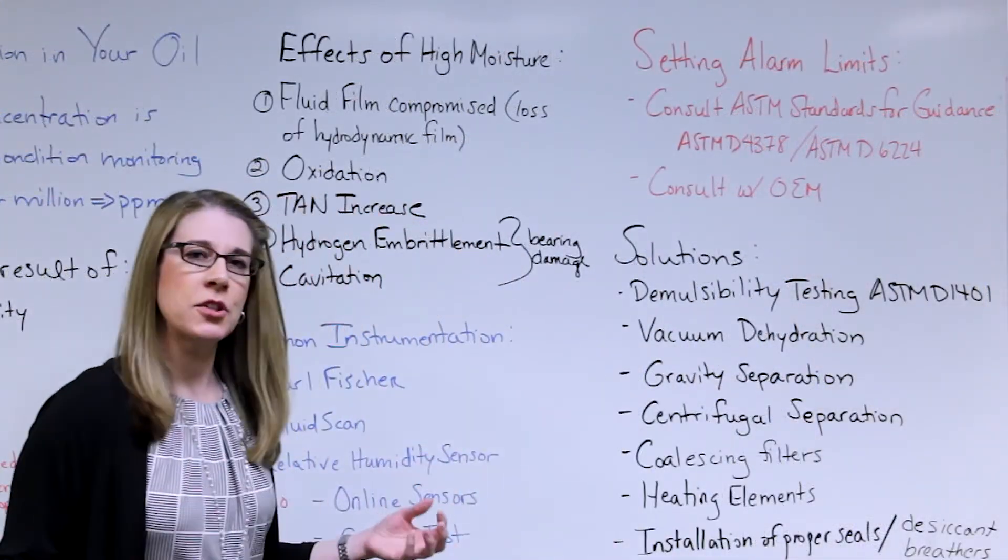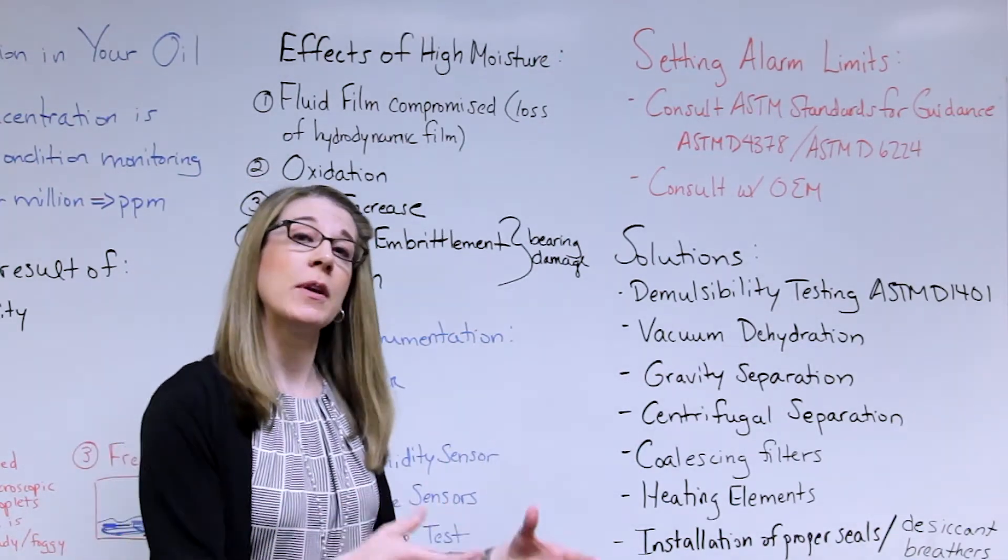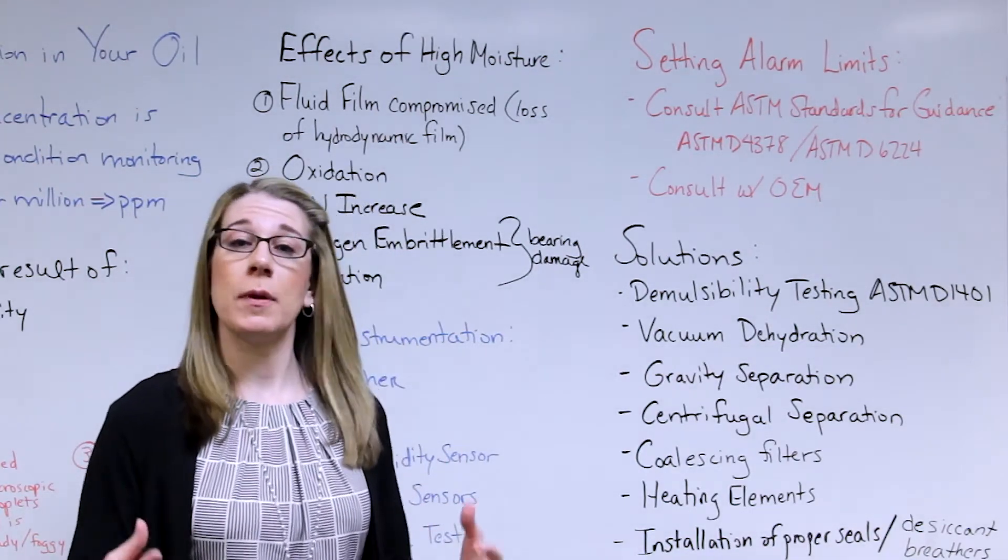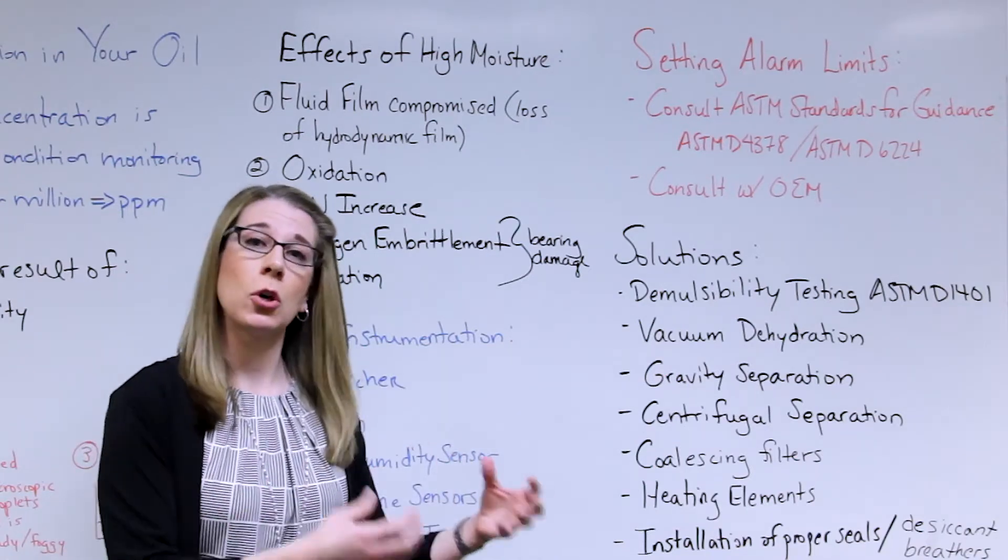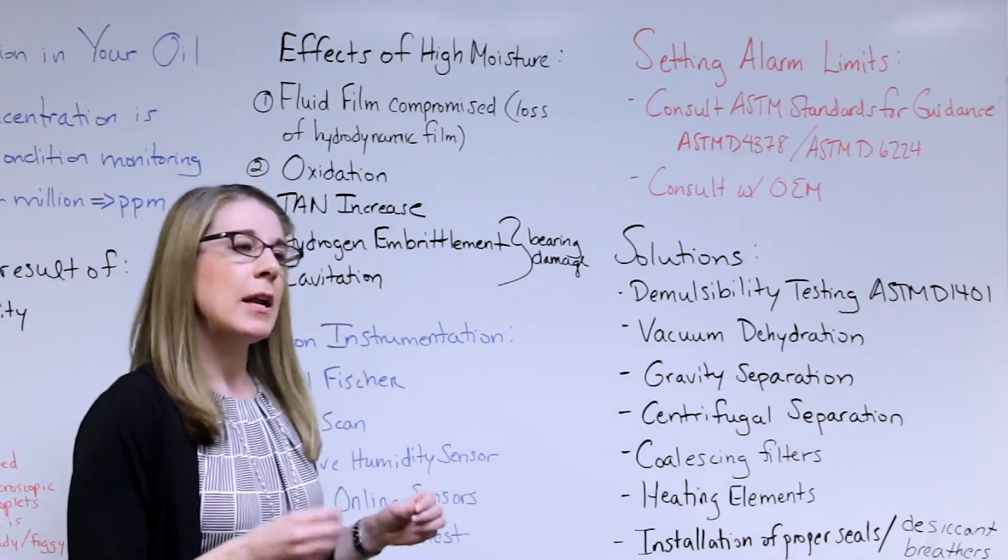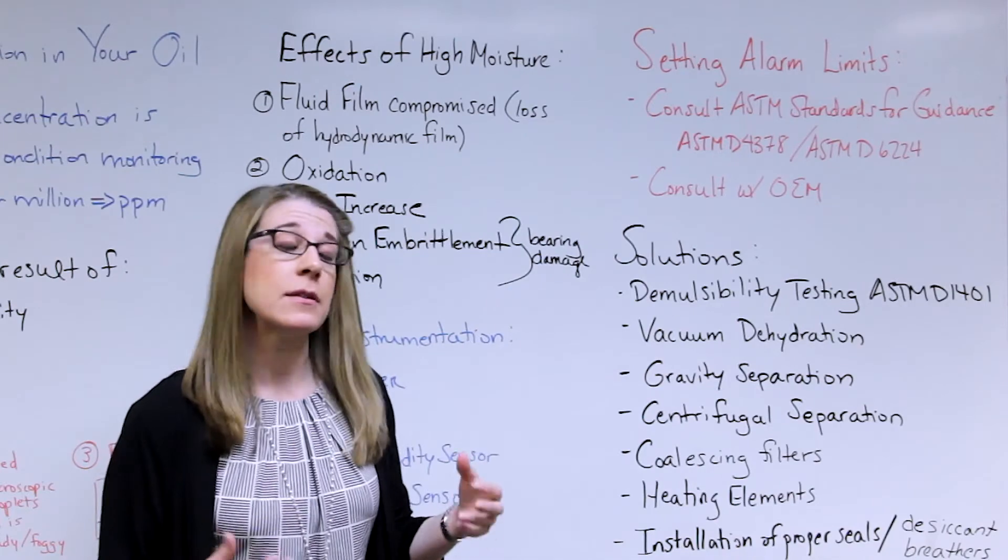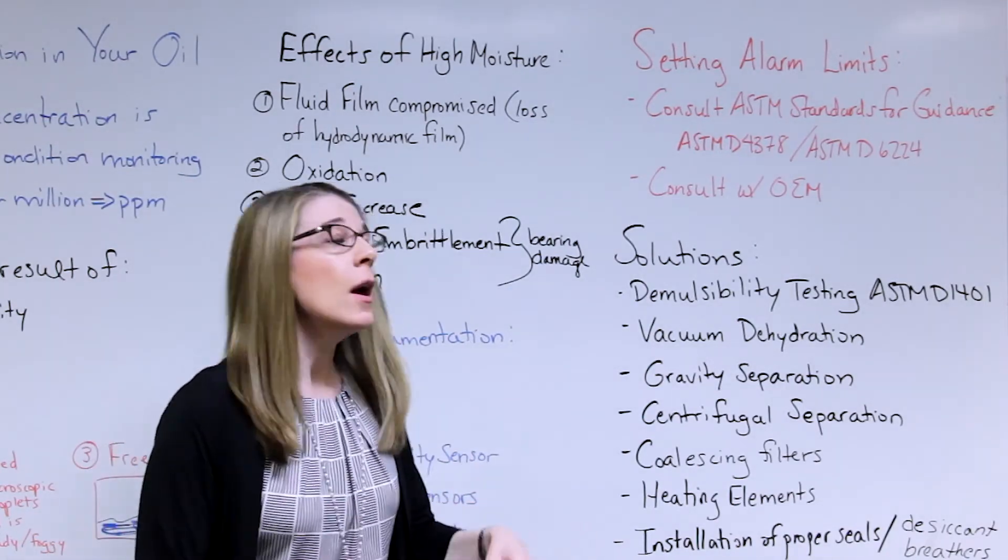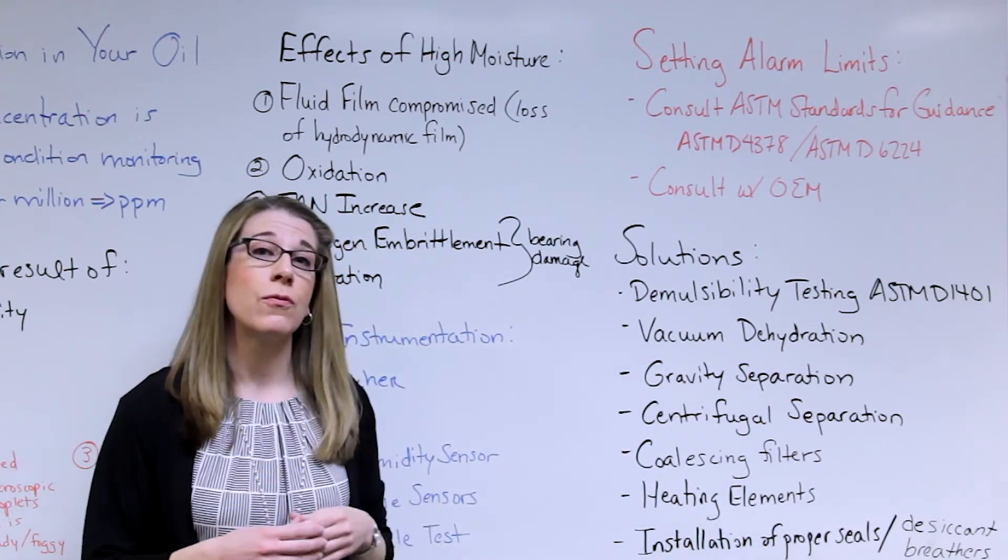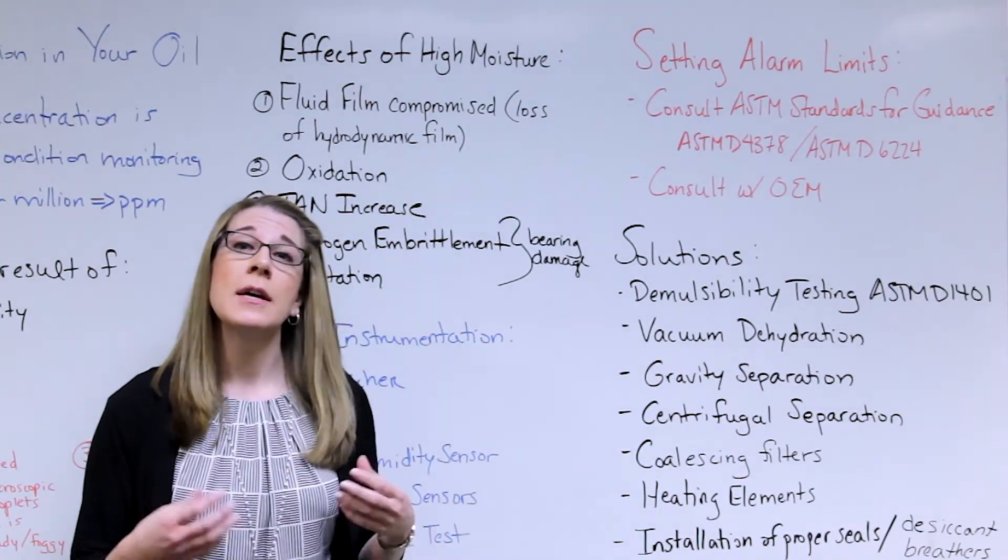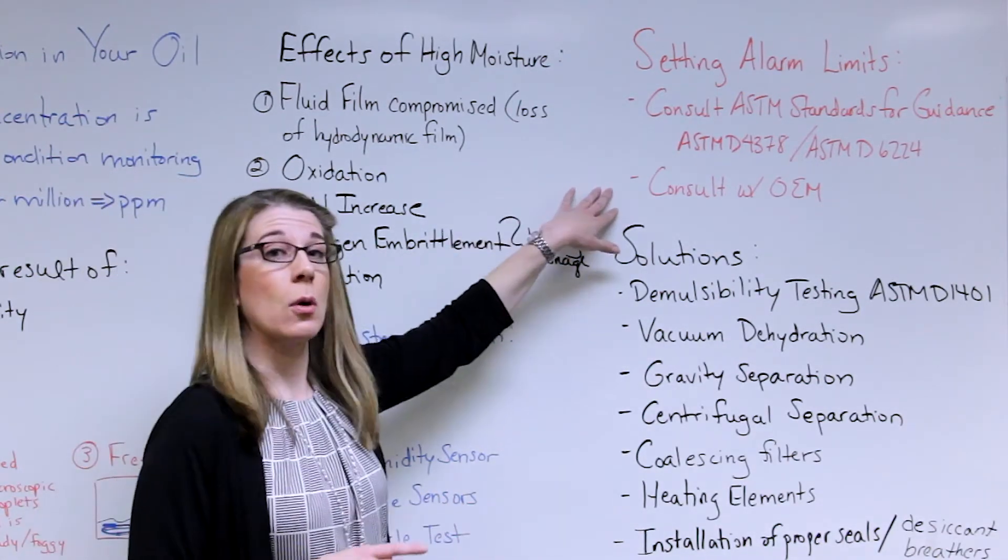Setting alarm limits is always a challenge—knowing what we're getting and what we should be getting. Specifically with turbine oils, it's going to be a little bit lower versus an engine oil, which may be a little bit higher. Keeping those things in mind is a good rule of thumb in helping us determine what those limits should be. There are also some ASTM standards out there that are really good to provide some guidance. Consulting with your OEM is great, but also familiarize yourself with these ASTM standards: ASTM 4378 and ASTM 6224. These are general practices and standards to help you set alarm limits for your oil. Good reads and worth looking at before you consult with your OEM.